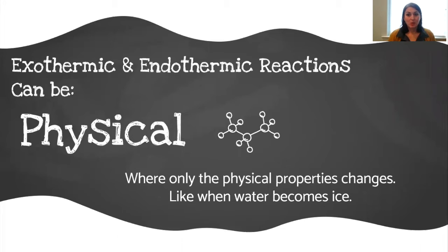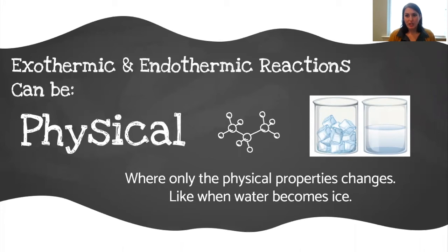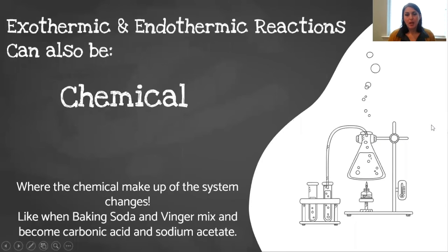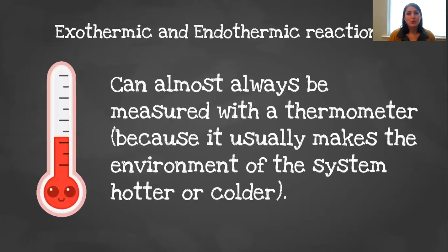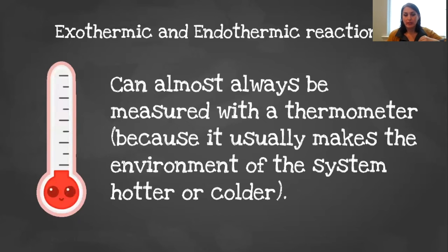Now let's review. Exothermic and endothermic reactions can be physical — like when the water became ice, only the physical property changes. The liquid became a solid, but not the chemicals. The chemical makeup of ice or water did not change, just the physical form — that's a physical reaction. Exothermic and endothermic reactions can also be chemical, where the chemical makeup of the system actually changes. When we mixed baking soda and vinegar, they became two different chemical compounds: carbonic acid and sodium acetate. The chemicals actually bonded together to form a new chemical compound — that's a chemical reaction. These reactions can almost always be measured with a thermometer because it either sends heat externally or brings in heat internally.